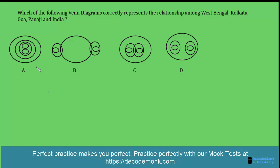A very common type of question asked in Olympiad is related to Venn diagrams. Venn diagrams are a schematic way of representing the elements of a set or a group. Basically, a Venn diagram shows the relationship between a group of different things called a set in a visual way.